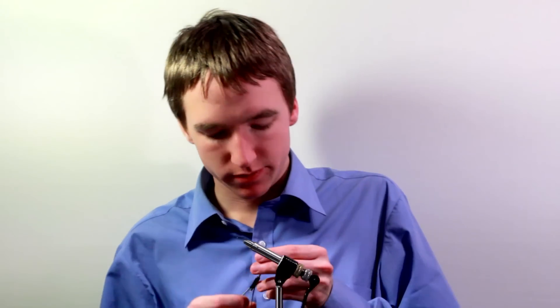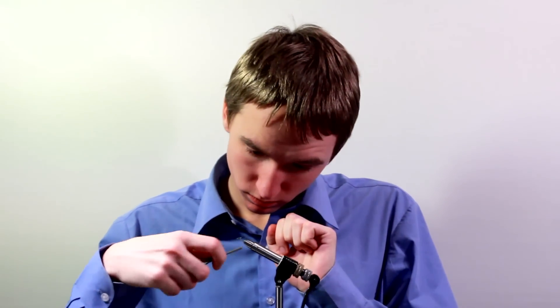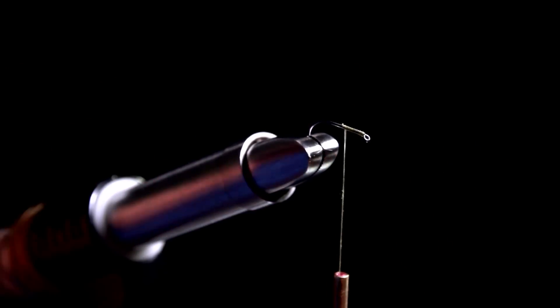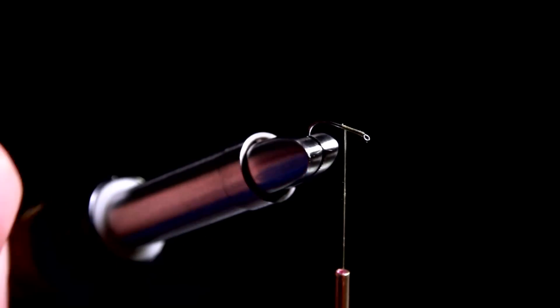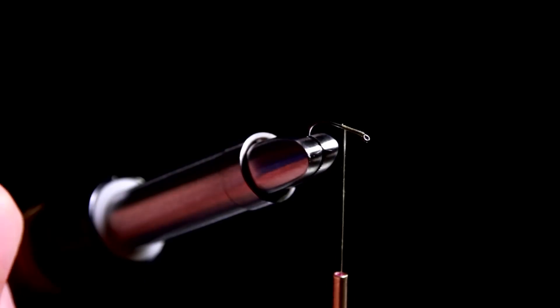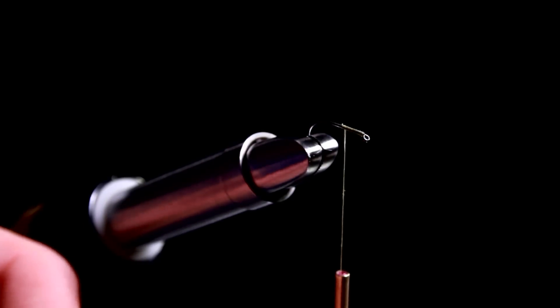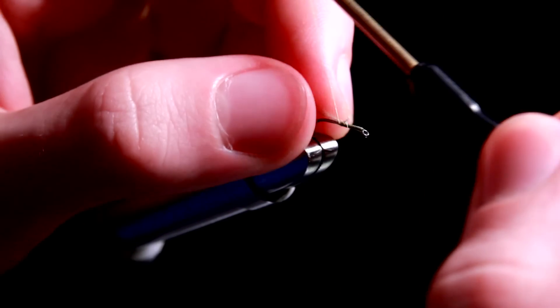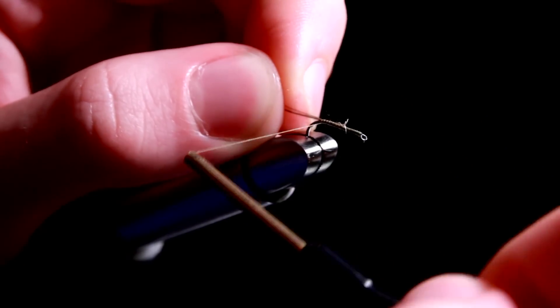We'll make a start. Start by attaching the thread to the hook. On our way down to the bend, we will tie in the tail. Rip off a few fibers from a CDC feather. You don't need very many. And tie them in. That's about the correct length. Then we can run it down all the way to the bend.